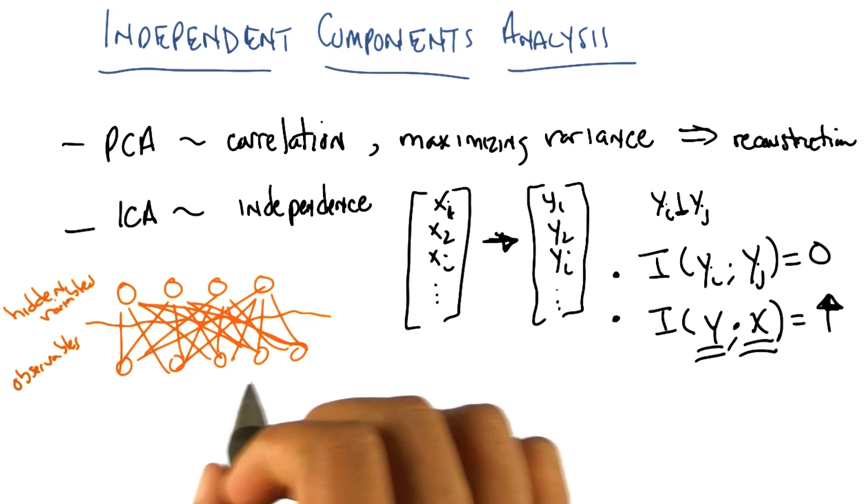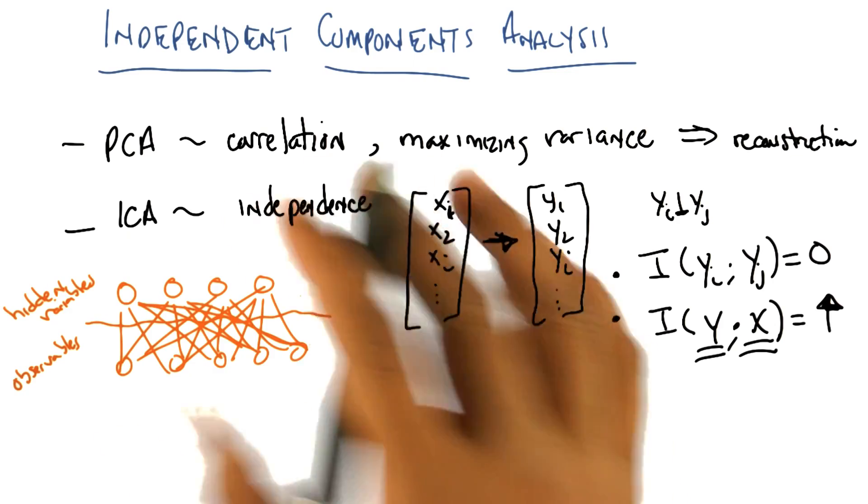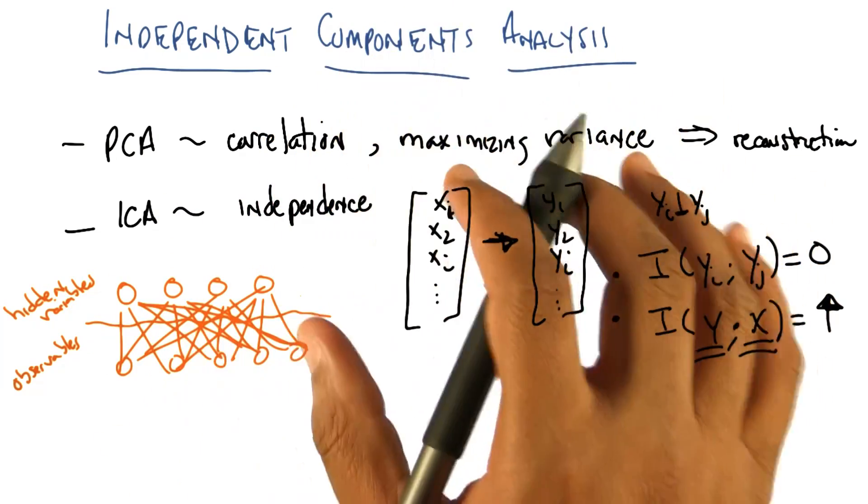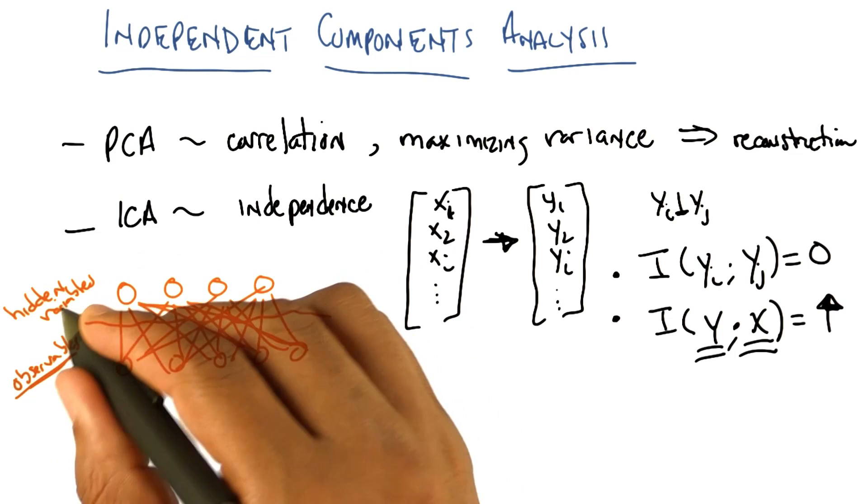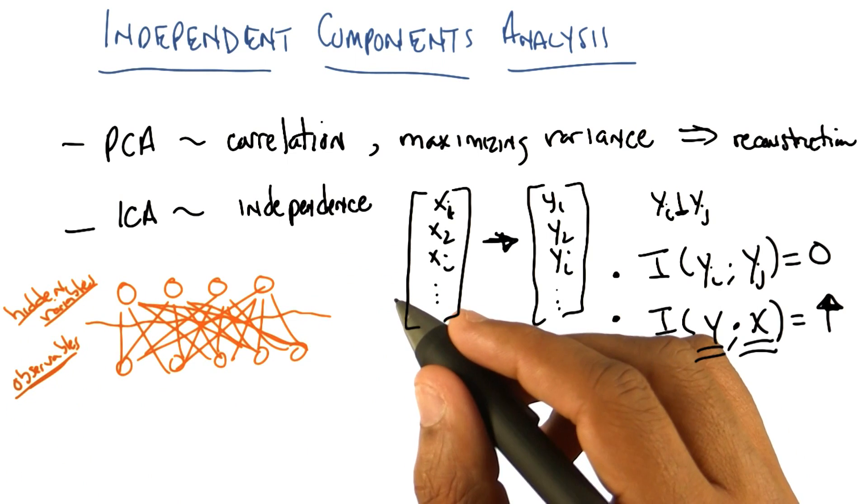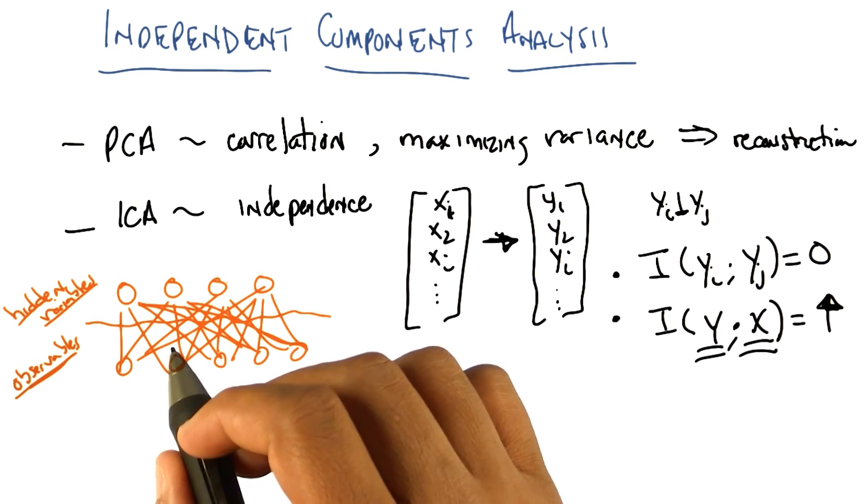And these observables are given rise to by values for the hidden variables. And they somehow combine in a sort of linear fashion. And our job, the job of any learner in this case, any unsupervised learner in this case, is given your observables, try to find the hidden variables under the assumption that these hidden variables are in fact independent of one another.